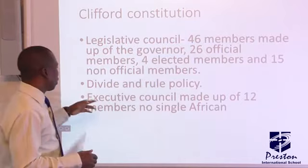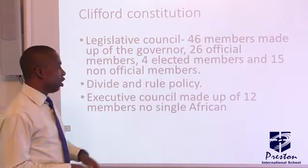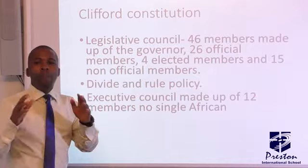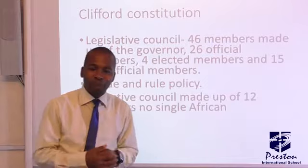The executive council was made up of 12 members, with no single African represented in it. Now, one peculiarity about the Clifford Constitution was that it introduced what we refer to as the elective principle.